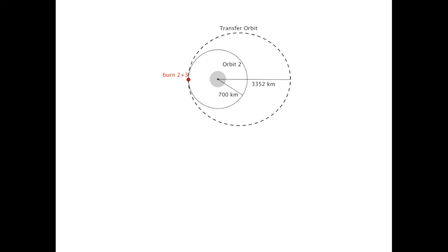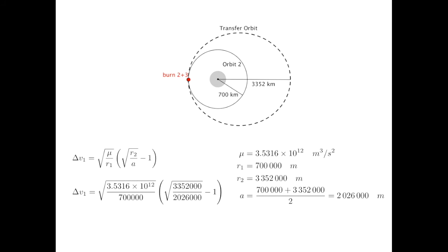Thankfully this combined burn is just a standard Hohmann transfer burn. As this burn is at the lower altitude, we use the delta v1 formula. Here are the numbers, plugging in, and after a bit of calculation we get 643 meters per second.